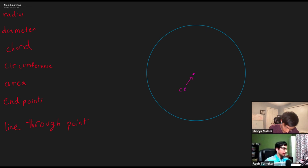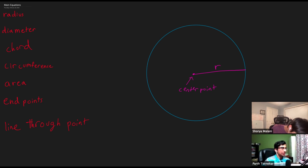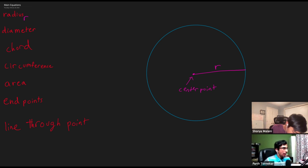Now we're going to talk about the first main thing, which is going to be the radius. That little pink point is going to be the center point. Before we talk about the radius, we should talk about the center point — that's the center of the circle. That little pink line that Shorya has drawn from the center point to the edge of the circle is going to be known as a radius, symbolized with a lowercase r.